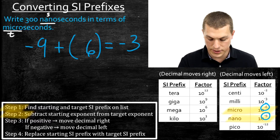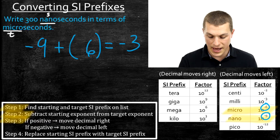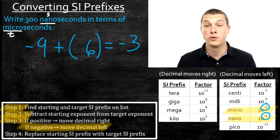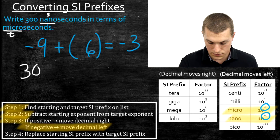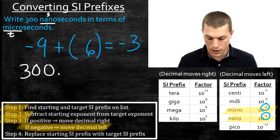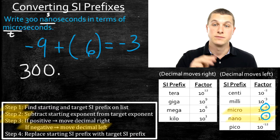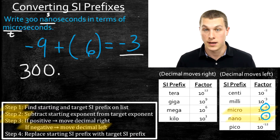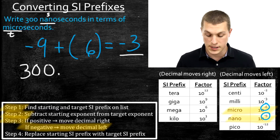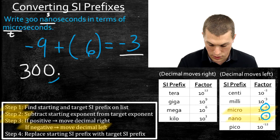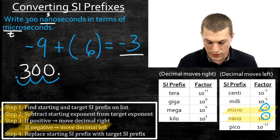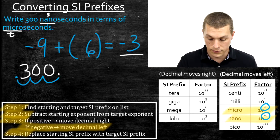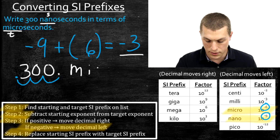In step 3, since that difference is negative, we're going to be moving our decimal to the left. We start with our 300 nanoseconds, place our decimal, and move it to the left 3 times — 3 because that's the difference between negative 9 and negative 6, and to the left because that difference was negative. Step 4 says replace our starting SI prefix with the target, so this is just 0.3 microseconds.